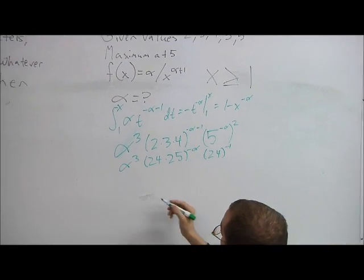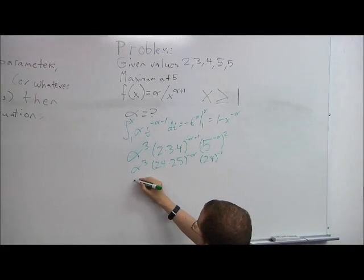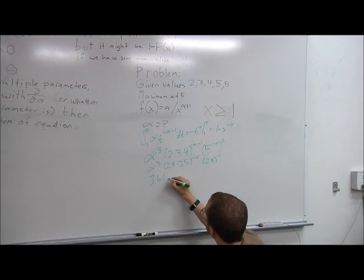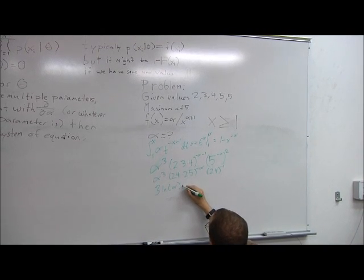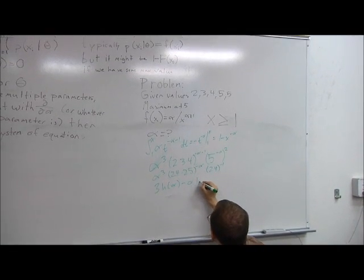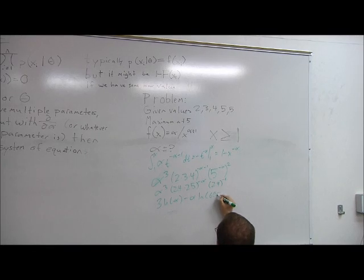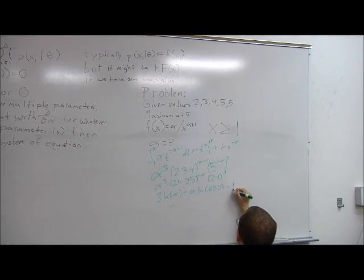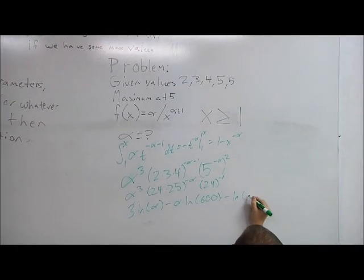When we take the log, we get 3 times ln alpha minus alpha times ln 600 minus ln 24.